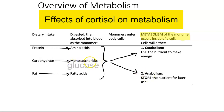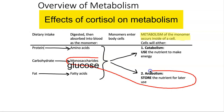Glucose is a common monosaccharide, and by glucose sparing, what it means is cortisol is not going to use it — it's going to spare it and store it for later. So under the effects of cortisol, glucose is going to be stored for later, and the storage form of glucose is glycogen.